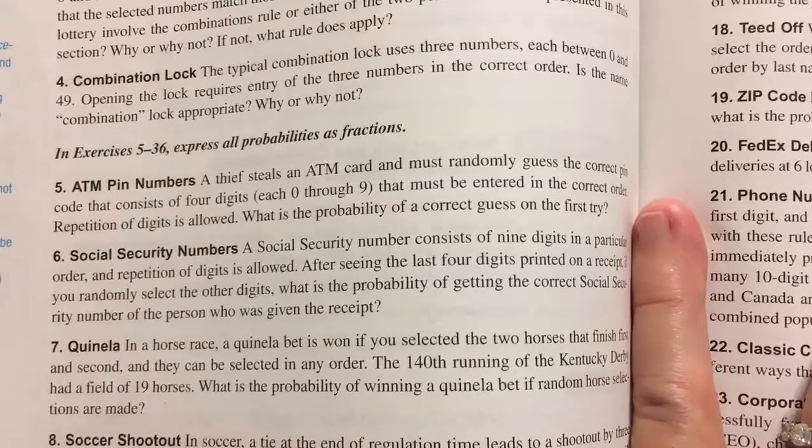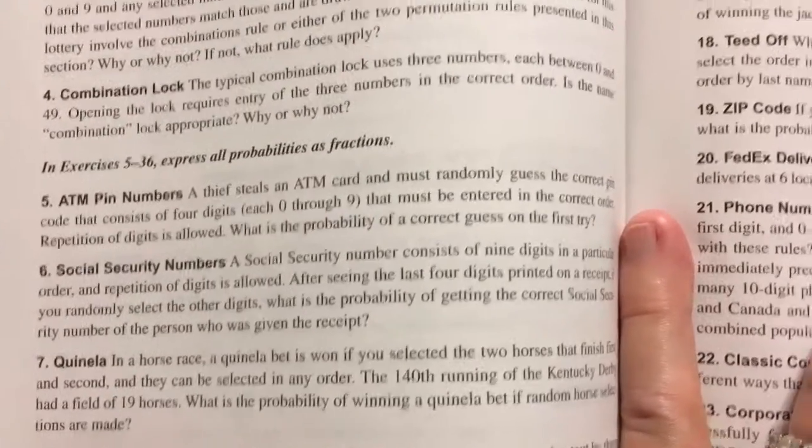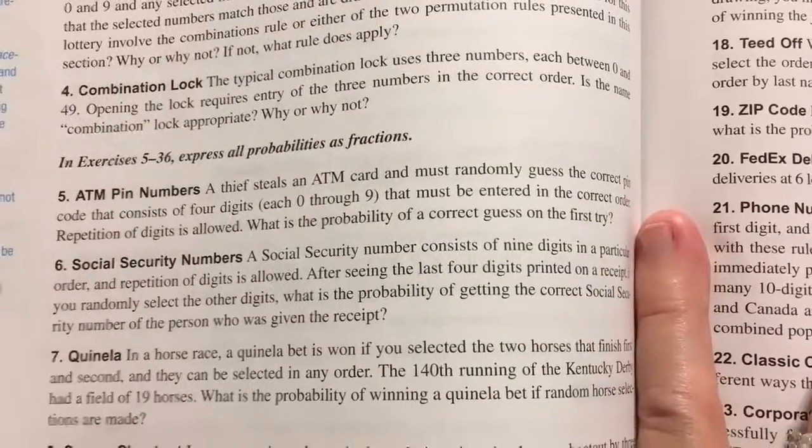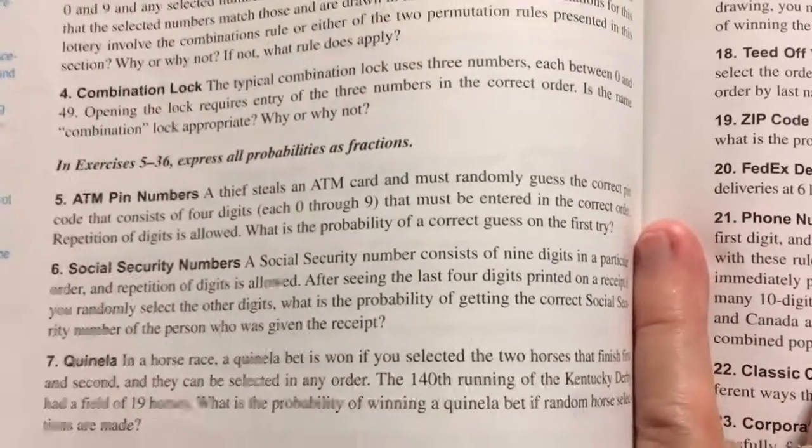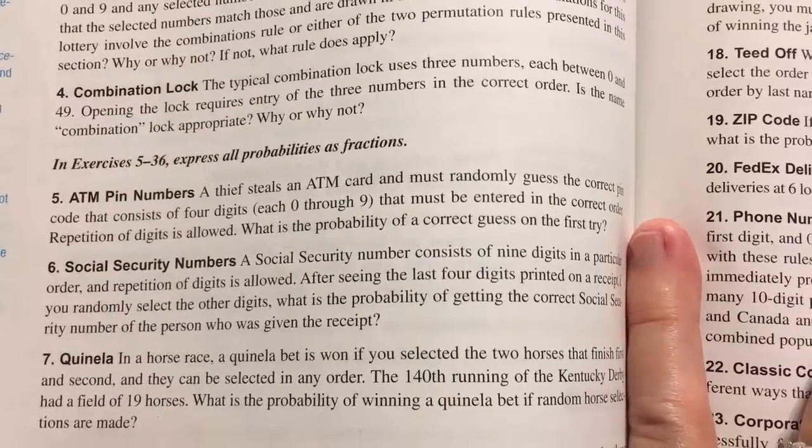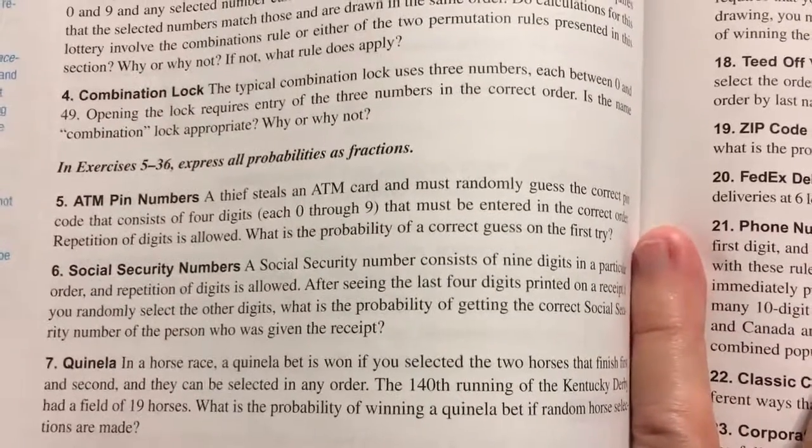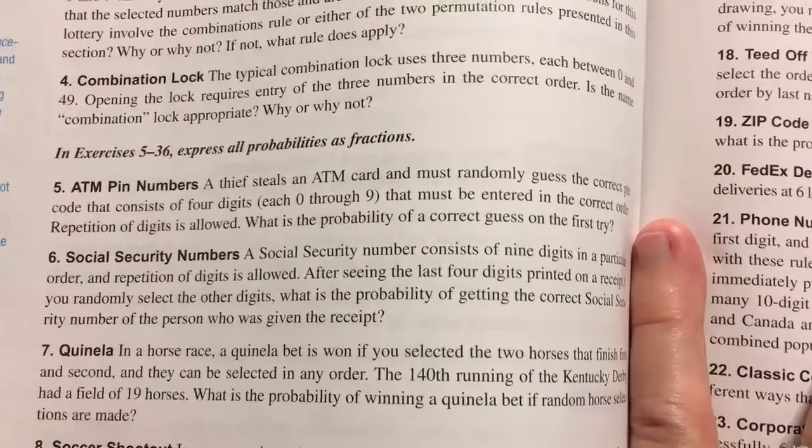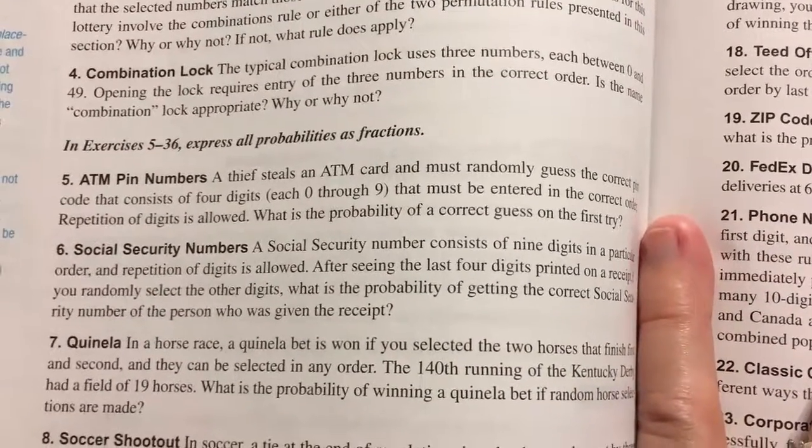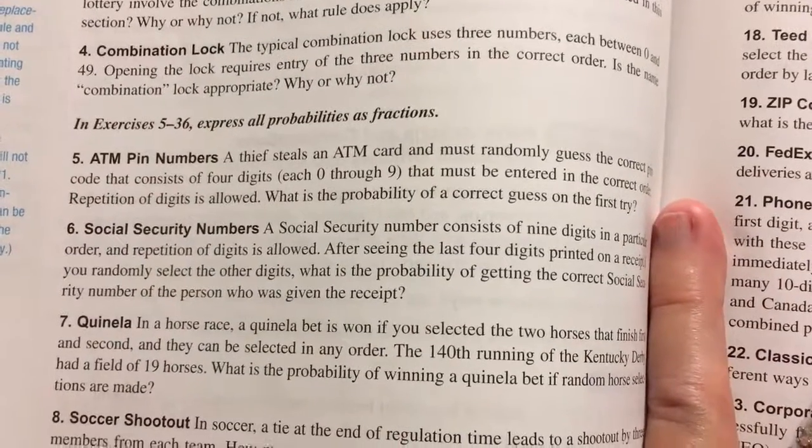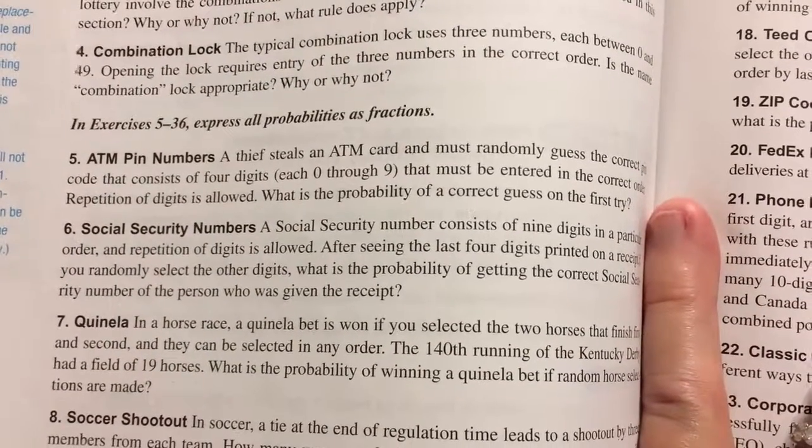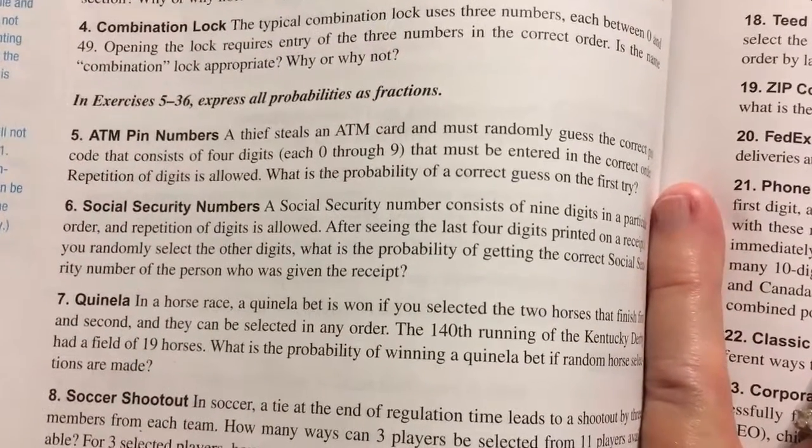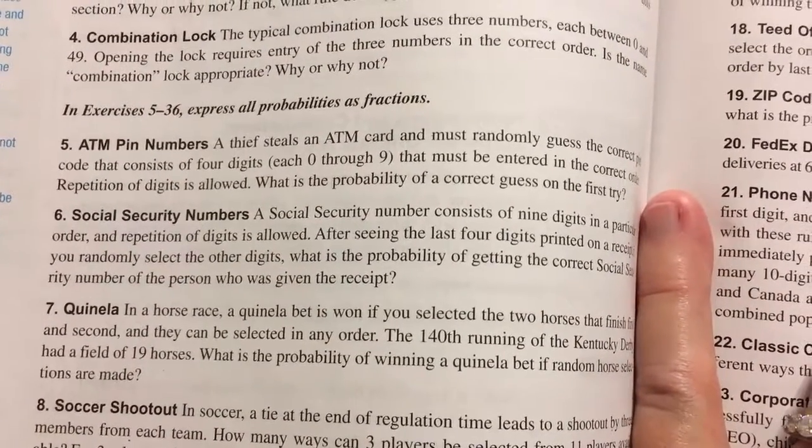Here is number five. ATM pin numbers. A thief steals an ATM card and must randomly guess the correct pin code that consists of four digits, each one zero through nine, that must be entered in the correct order. Repetition of digits is allowed. What is the probability of a correct guess on the first try?